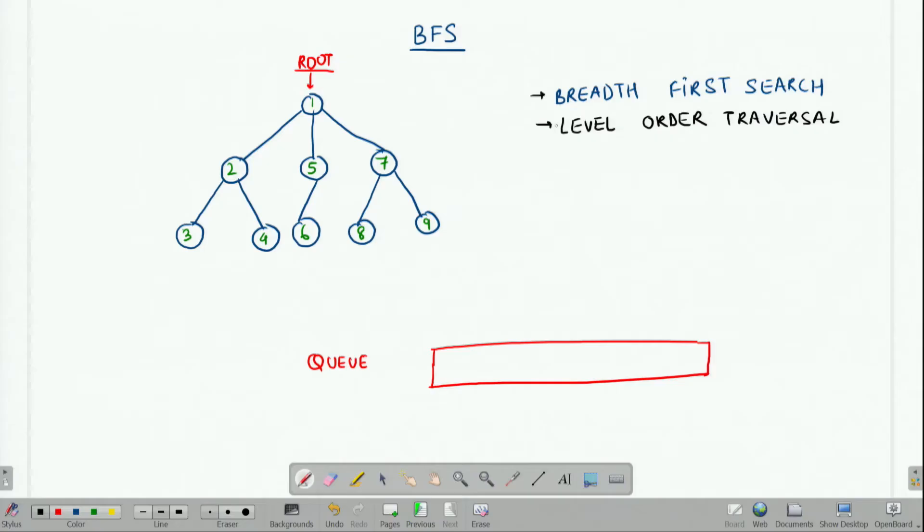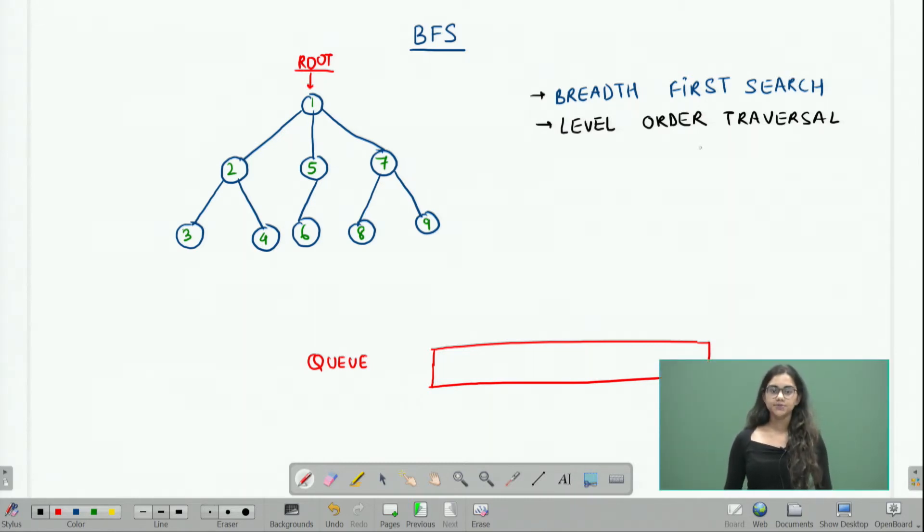Welcome to the breadth first search module. In this module we're going to look at how to traverse a tree in a level order manner and what are the uses of this algorithm. Breadth first search is also called level order traversal. This is because in this algorithm we try to traverse the given tree level by level.